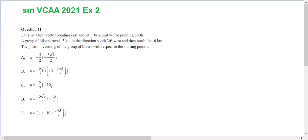Let i be a vector e east and j be a vector north, i and j.